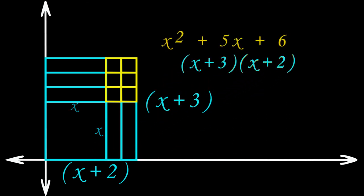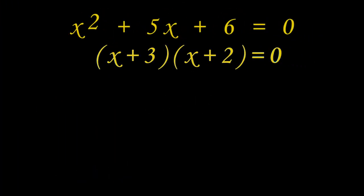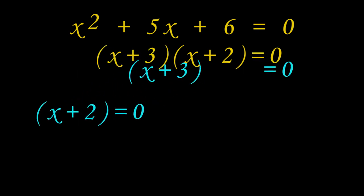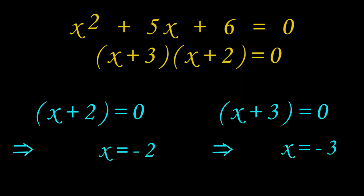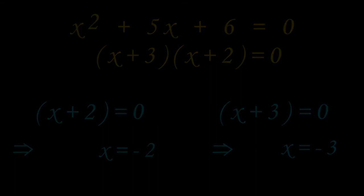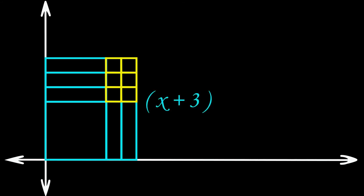If we equate this with zero, we get (x plus 2)(x plus 3) equal to 0. Either x plus 2 equal to 0 or x plus 3 equal to 0, giving x equal to minus 2 or x equal to minus 3.